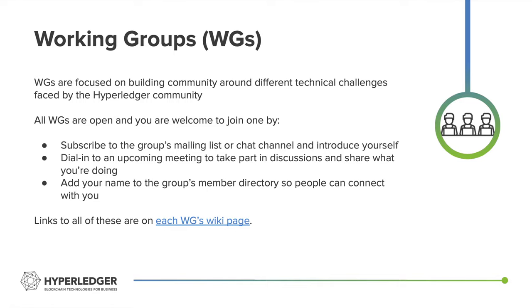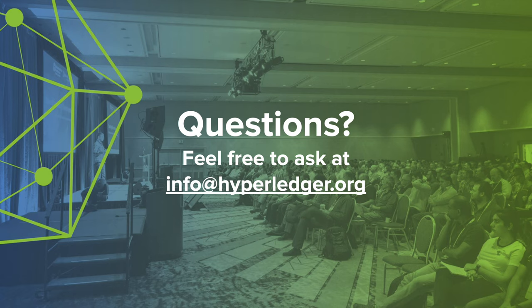Working groups are similar to special interest groups, but they are focused on cross-cutting technical themes within the community such as performance and scale or architecture. And the same as the special interest groups, you can get involved by subscribing to the group's mailing list or chat channel, dialing in to an upcoming meeting, or adding your name to a group's member directory on their wiki pages. If you have any questions, please feel free to send us an email at info@hyperledger.org.